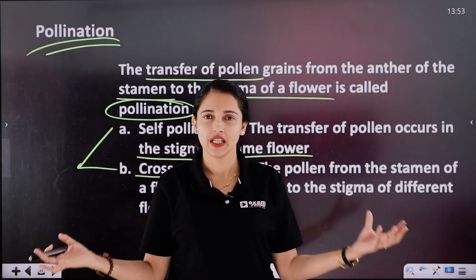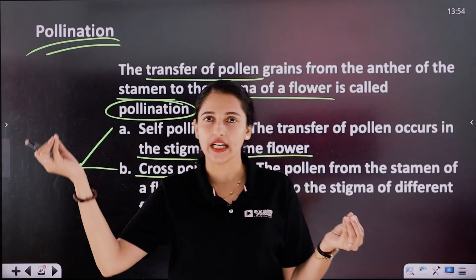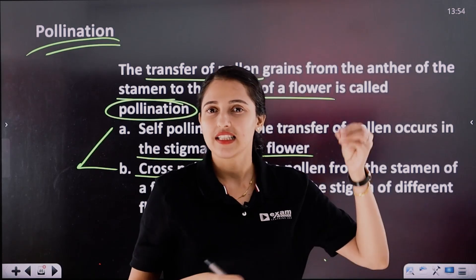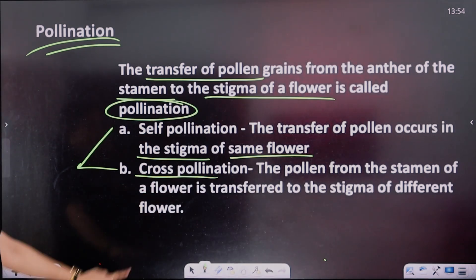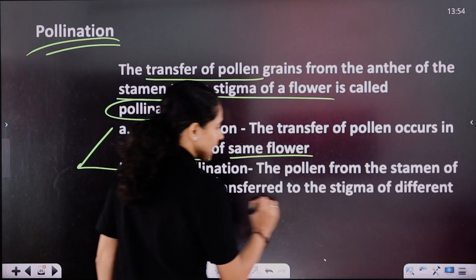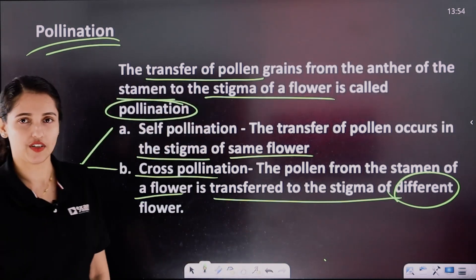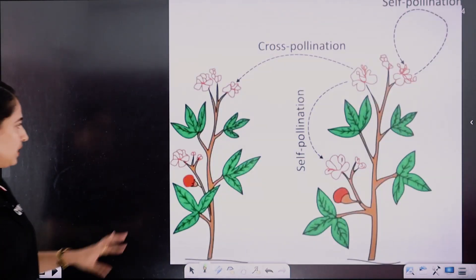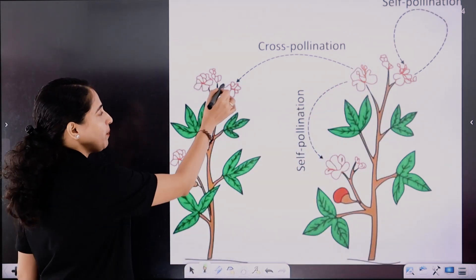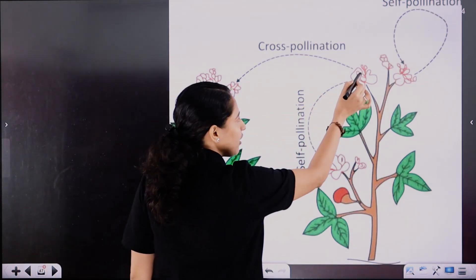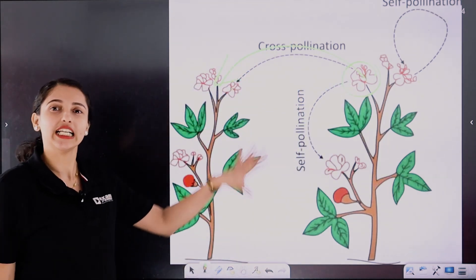For cross-pollination, two different flowers are involved. The pollen grains are transferred to the stigma of a different flower. So cross-pollination means pollen grains from the stamen of one flower are transferred to the stigma of a different flower.